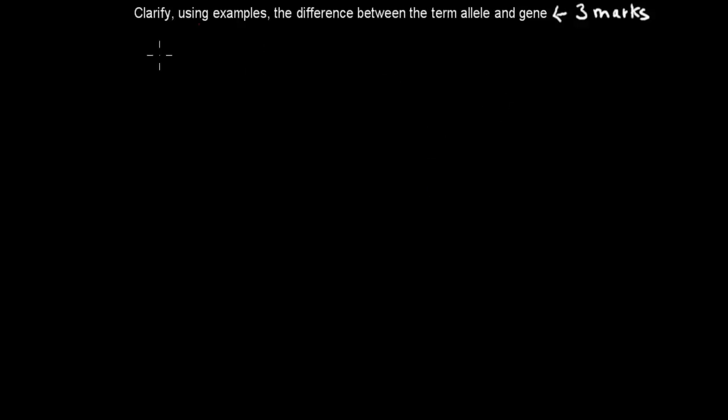Welcome back. So the actual verb here was clarify, which means we need to clarify using examples. So we need to be able to tell the difference between allele and gene. So we have to exactly point out what the difference is, and we also have to use an example. And if you do that, that gets you your three marks.